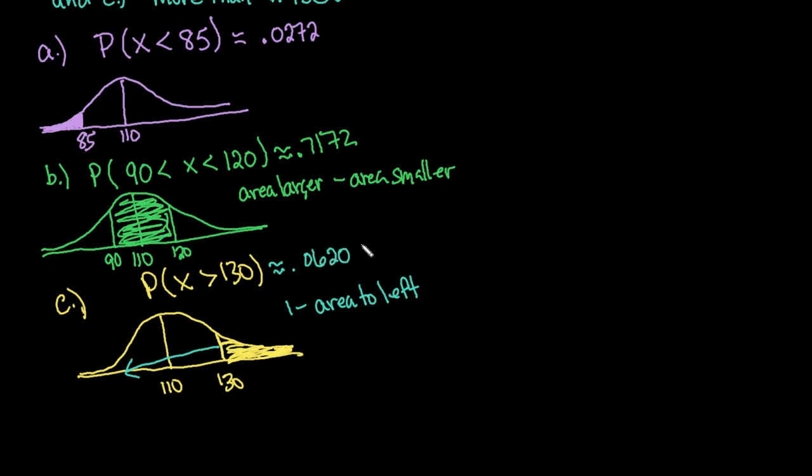Using Excel speeds up the process over using the table. With the table, you'd first convert values to z-scores, then find the approximate z-score in the table. The table isn't as accurate or precise as Excel.